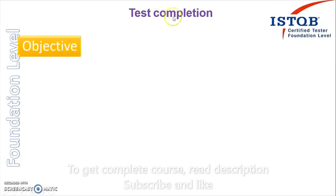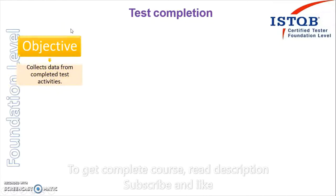The first thing we will see is the objective of the test completion activity. The objective is to collect the data from the completed test activity — so whatever activities we have completed, like in the first stage we made test specification, that will be one of the data we will collect. We also collect design, traceability matrix, and all the reports which we have generated. So at this process we are collecting all the things which we have done till now in the testing process.